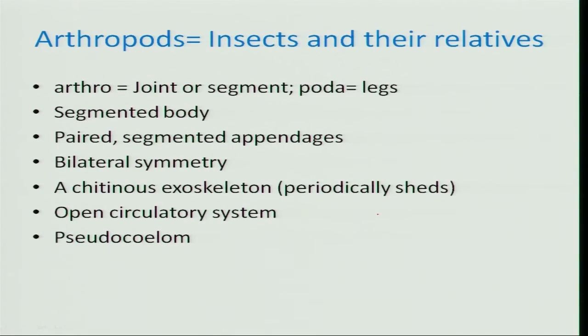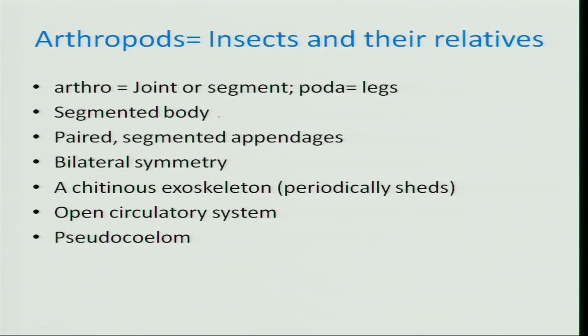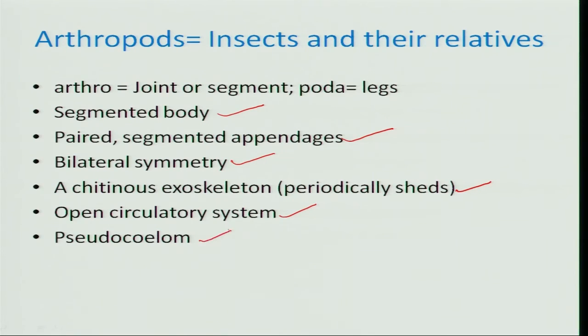What are the characteristic features of arthropods? The word 'arthropod' can be broadly divided as 'arthro' meaning jointed, and 'poda' meaning appendage or legs. All these groups have a jointed or segmented body and paired, segmented appendages. These appendages are bilaterally symmetrical and they are provided with an exocuticle — a special cuticular structure made up of chitin which is periodically shed. They have an open circulatory system, unlike higher animals which have a closed circulatory system, and the body cavity is not a true coelom.